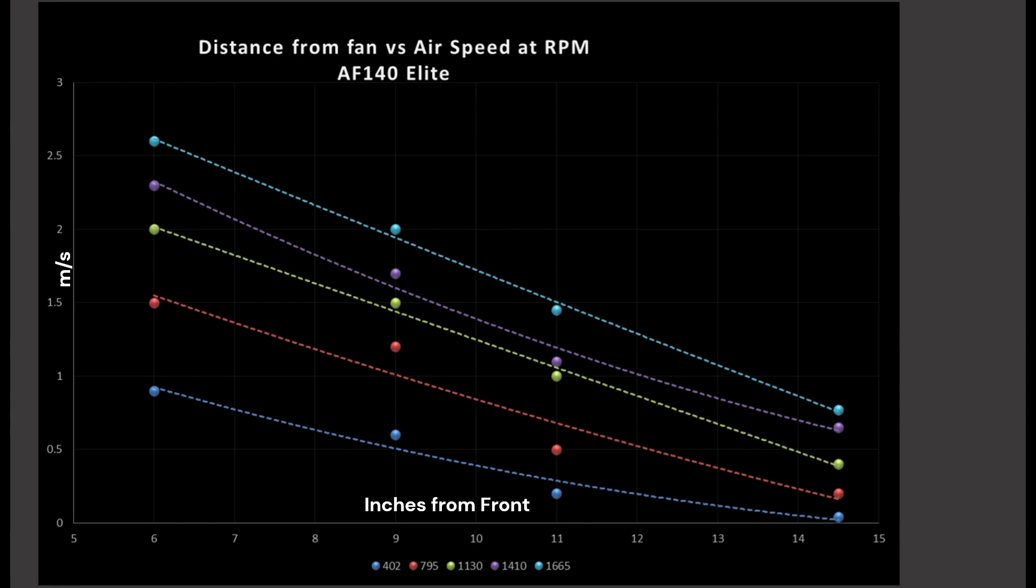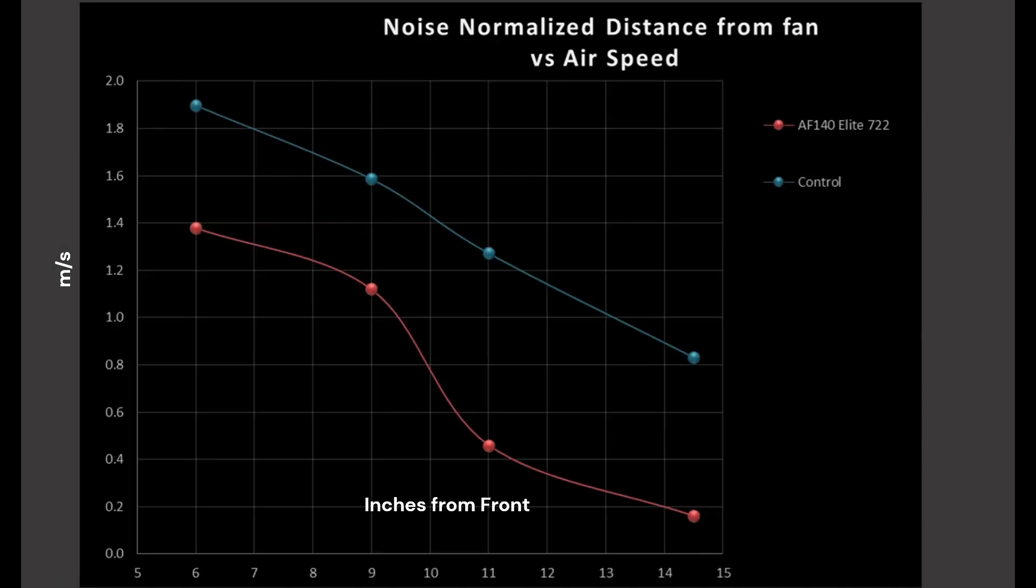So mid-tower being like Fractal Design Meshify 2C and like Corsair 550D, something like that. Or are you getting a large tower, something like the Fractal Design Torrent, which is very representative of the 14.5-inch mark? Well, I have a control fan, this teal color, and it is three parts A12X25 to one part A14. Two fans that I consider very good in their respective categories. The A12X25 tends to do a little bit better at 6 and 9 inches, while the A14 tends to gain ground and do better at the 11-inch and 14-inch marks. So by making this composite imaginary fan, I get kind of the best of both worlds to then directly compare other fans against.